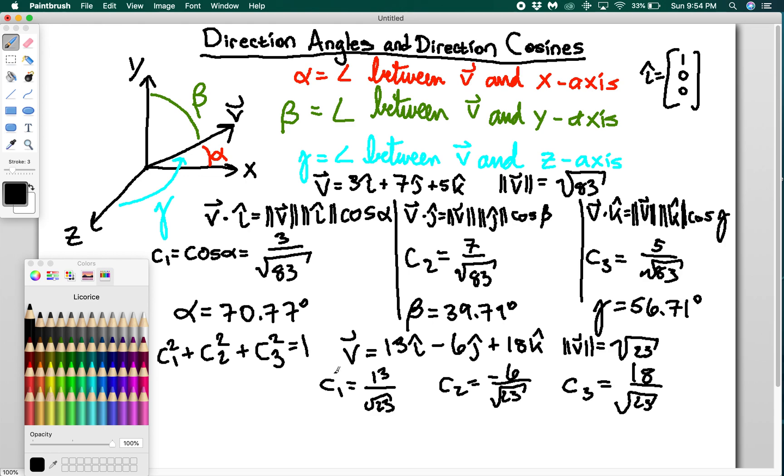And from here, I just do inverse cosine to get alpha equals 55.58 degrees, beta equals 105.12 degrees, and gamma is 38.49 degrees.